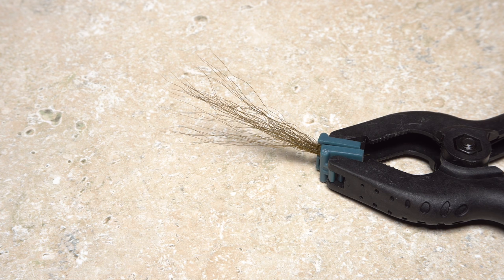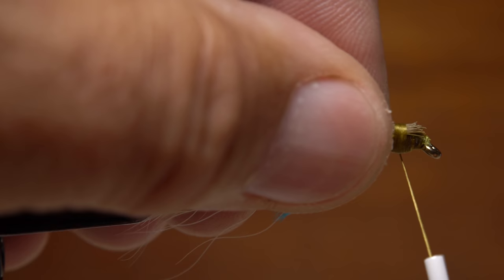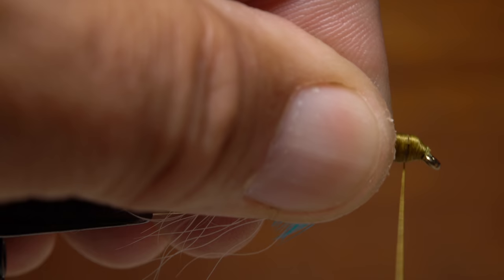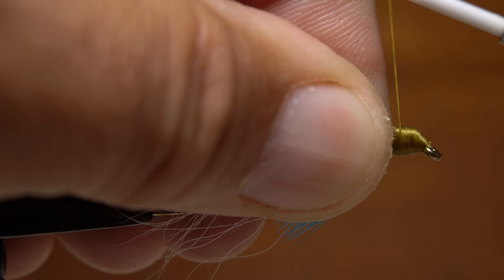The darker olive brown bucktail is the last material to be tied in. Align its tips with those of the underwing and take wraps of tying thread to anchor the hair. Just as before, lift the butt ends up and snip them off at a shallow angle. Take wraps of tying thread to build up a smooth head on the fly. Wrapping from front to back will help to keep the thread wraps from slipping down and becoming loose.